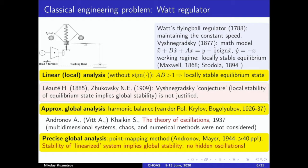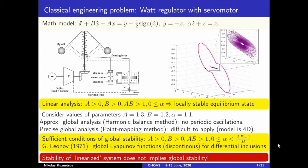Thus, it was proved that linearization and conditions of local stability imply global stability and absence of hidden oscillations for the flying ball regulator. However, in general, local stability may not imply global stability.